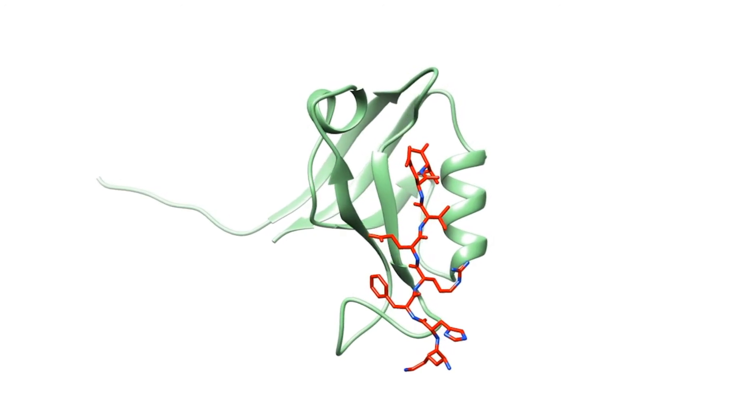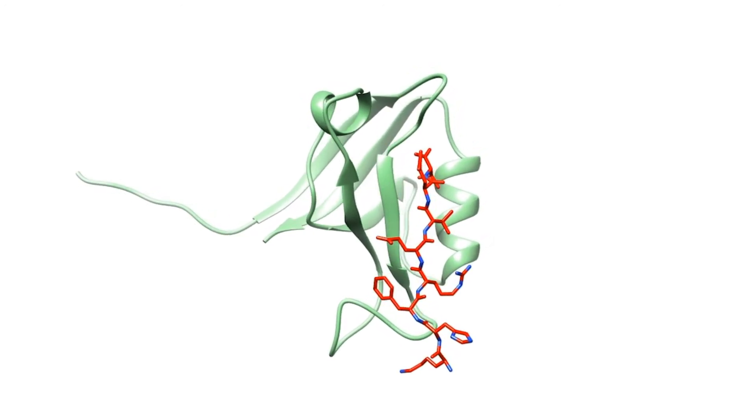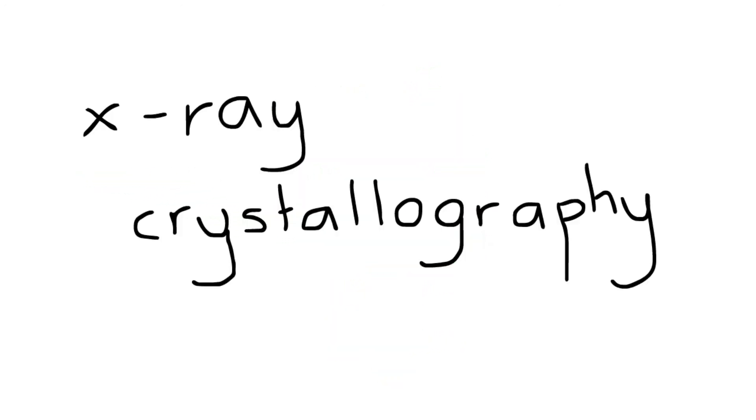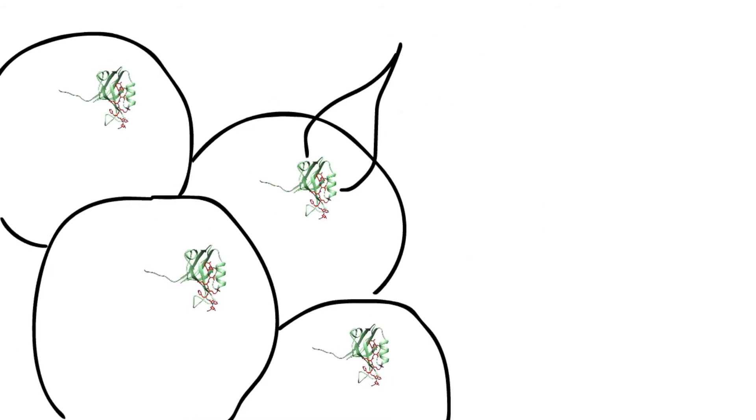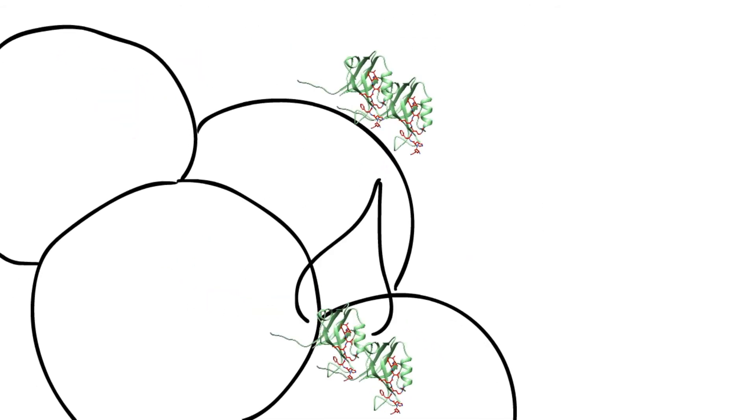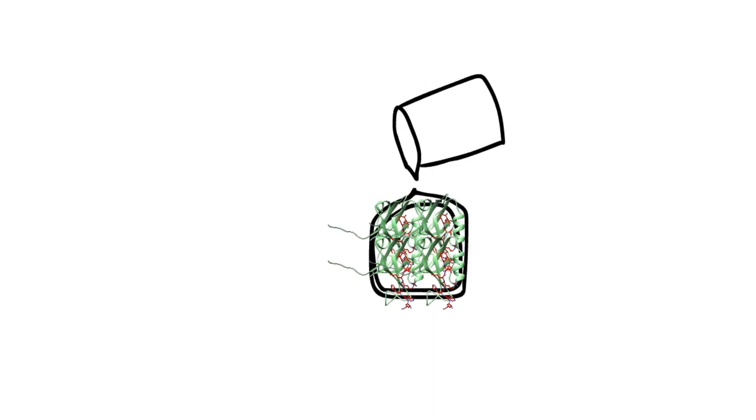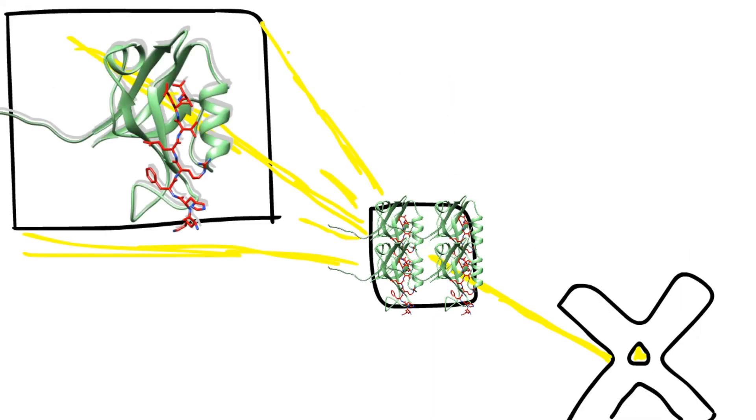To see the detail of these proteins interacting, I use a technique called X-ray crystallography. I isolate the proteins together and crystallize them so that I can use an X-ray to get the atomic details.